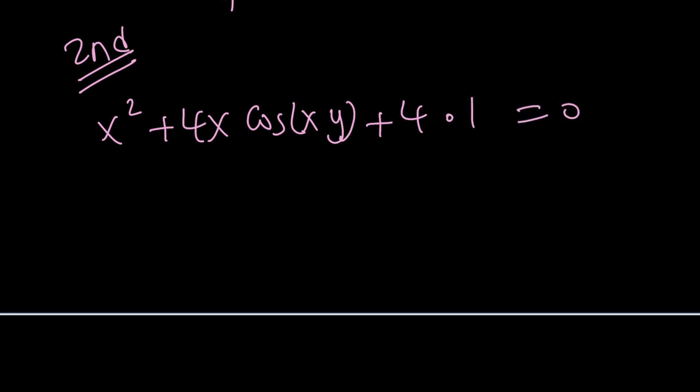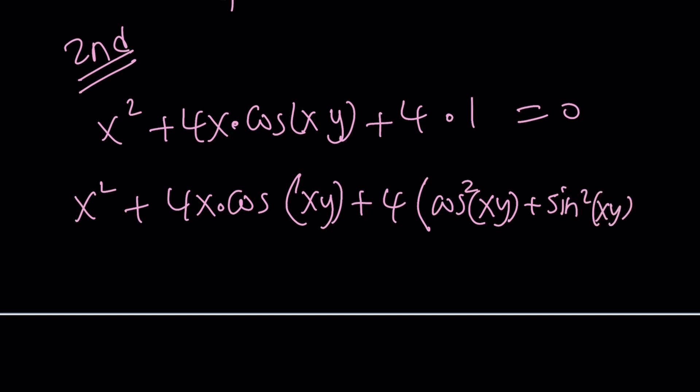Now, you might be thinking like, why on earth you're doing something like that, right? Because I'm about to replace one with something that is trigonometric. And that thing is cosine squared xy plus sine squared xy. Where did I pull that from? Like out of thin air? Well, this technique is often used. This is called completing the square.